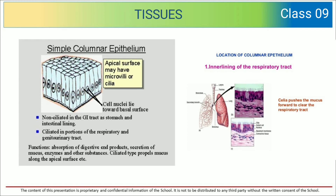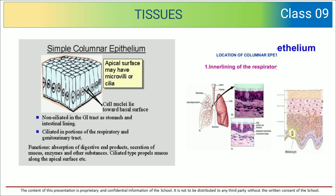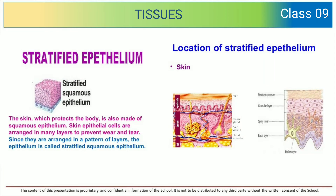Cilia push the mucus forward to clear the respiratory tract. Now let us talk about stratified epithelium. Stratified squamous epithelium — the skin, which protects the body, is made up of squamous epithelium. The skin epithelium cells are arranged in many layers to prevent wear and tear. Since they are arranged in a pattern of layers, the epithelium is called stratified squamous epithelium. Its location is the skin.